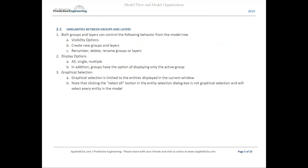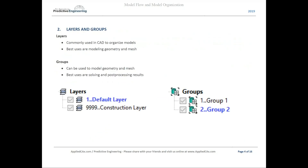Let's start with groups and layers — what are they? Layers are commonly used in CAD to organize models; that's how they started, and then the concept transferred into FE as well. Their best use is for modeling geometry and mesh. Groups can also be used to model geometry and mesh and are pretty versatile, but their best uses are actually in solving and post-processing results.